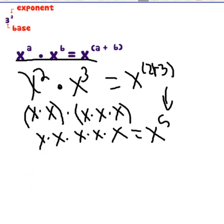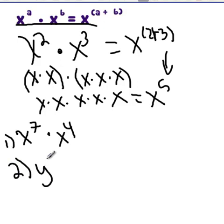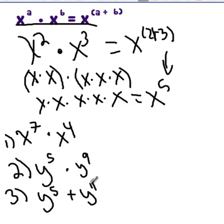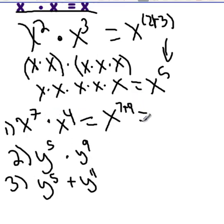To make sure you're comfortable with it, let's look at a few others. x to the seventh times x to the fourth. Let's also try y to the fifth times y to the ninth. By the same logic as that prior problem, we write these out as x times itself seven times and x times itself four times, but the shortcut is just to add the exponents. x to the seventh times x to the fourth is x to the eleventh. Same here — y to the fifth times y to the ninth, just add the five and the nine, you get y to the fourteenth.